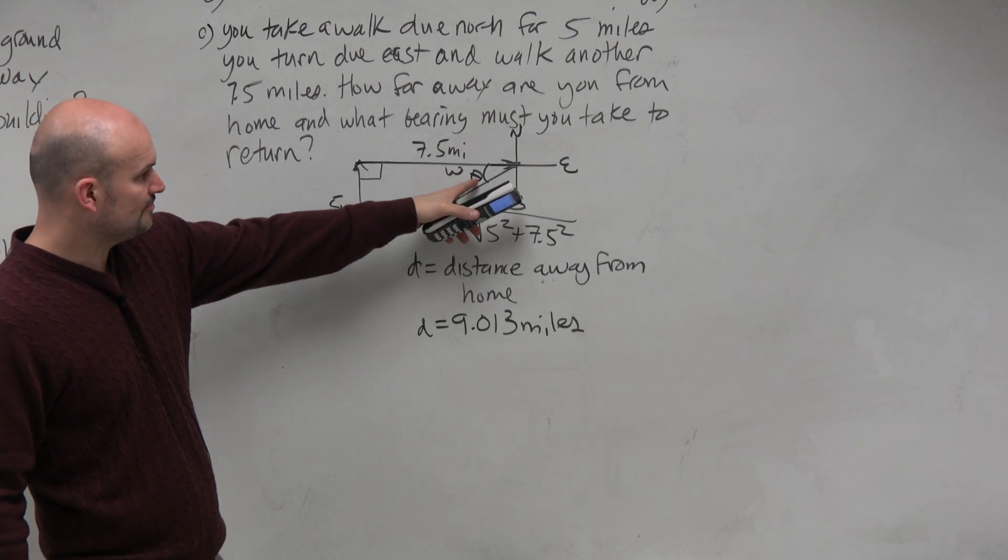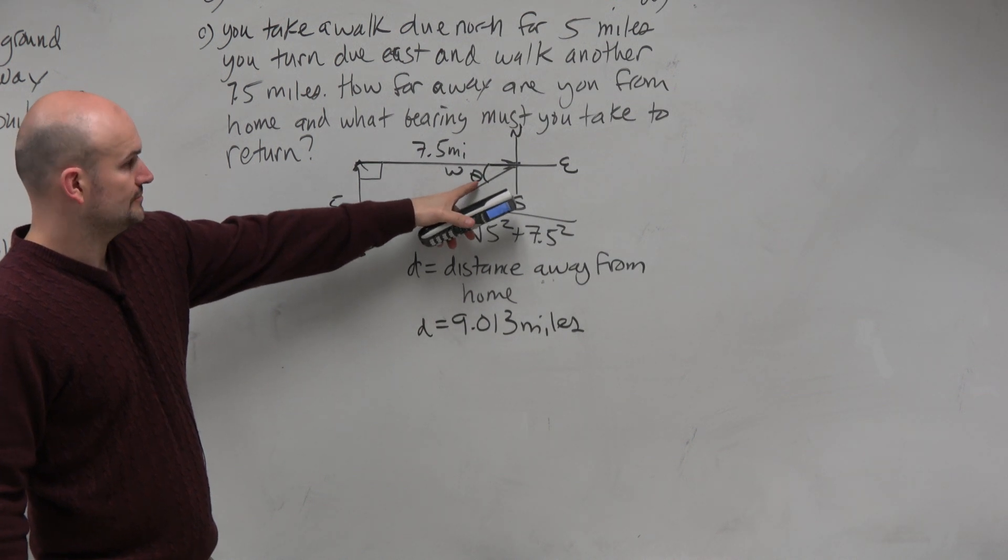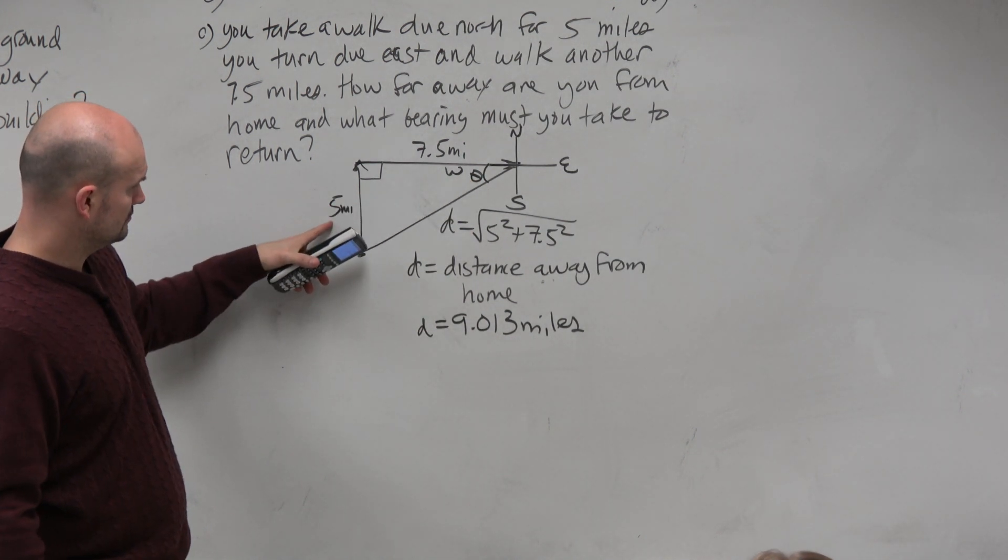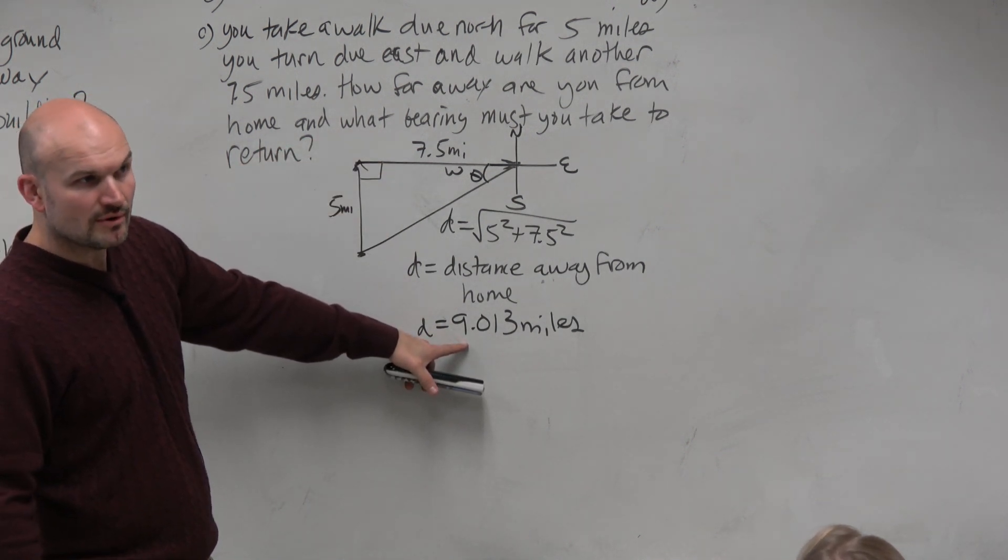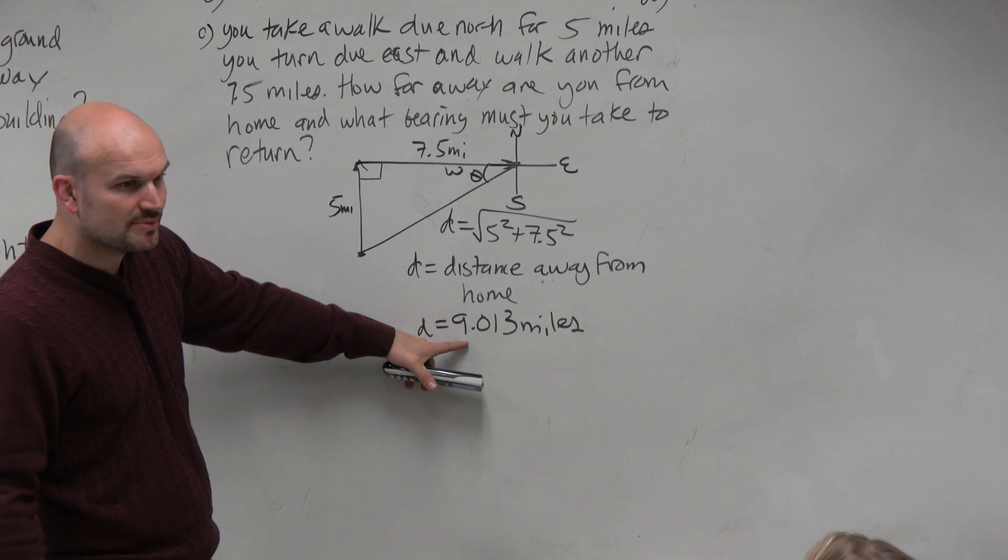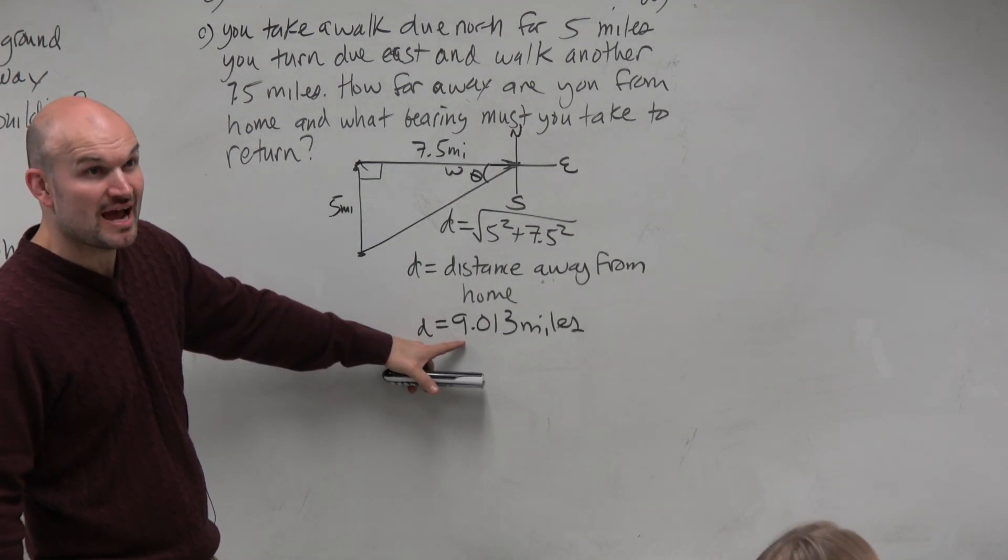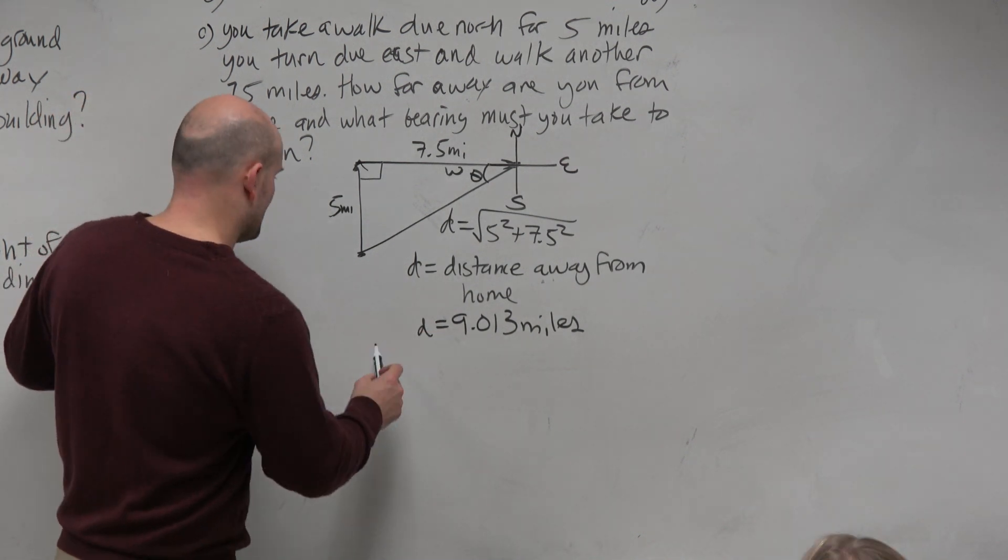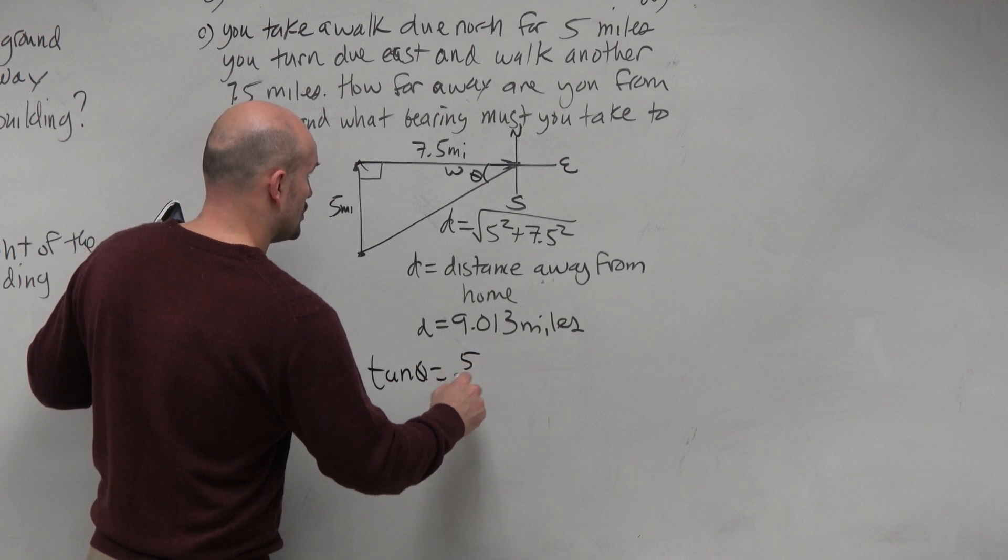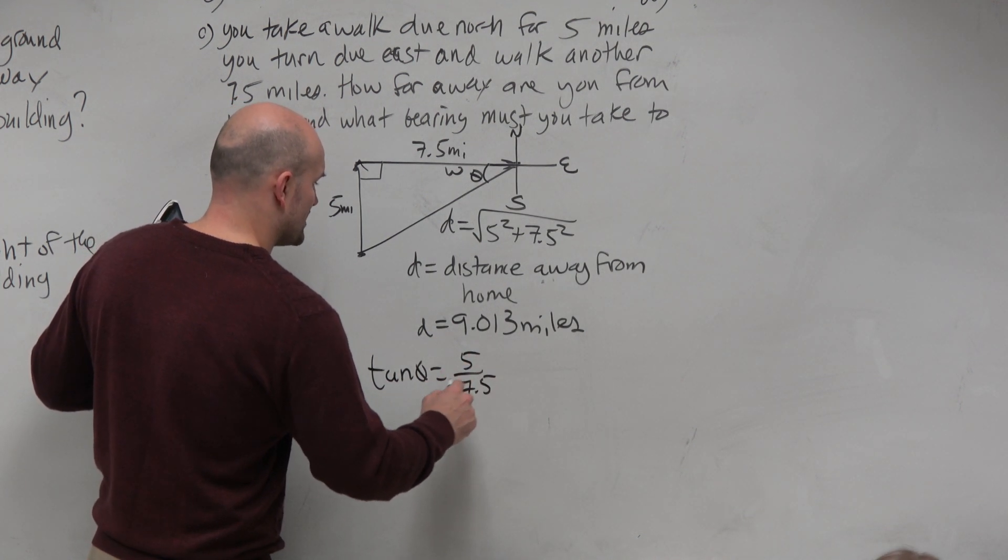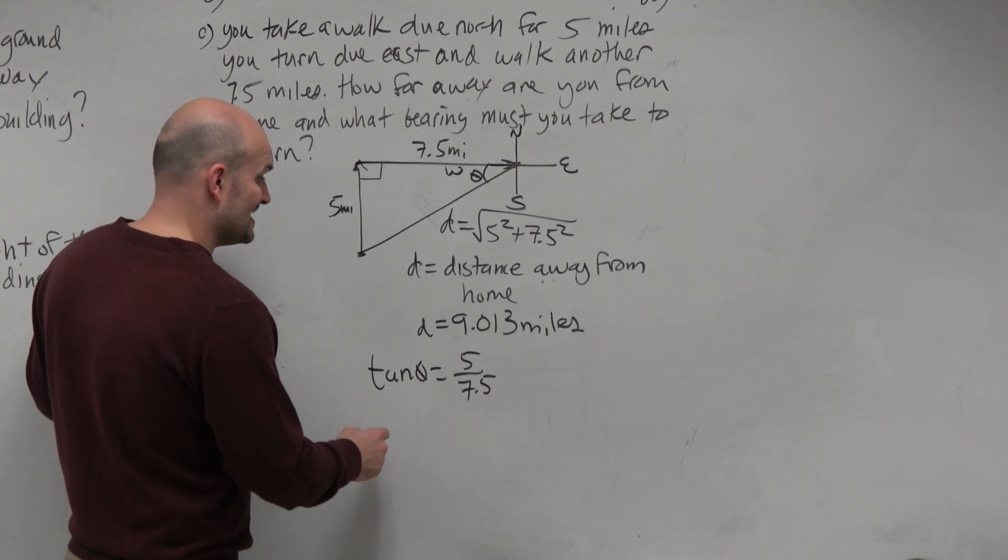Yeah. So this angle, based on this angle, what side lengths of the triangle do I have? Opposite and adjacent. You could use any trig function, right? But we don't really want to use the hypotenuse here because that's calculated, right? So typically don't use a calculated answer unless you have to. So I'm going to say, all right, if I have tangent of theta equals opposite over adjacent. Well, crap, how do I solve for a theta? Tangent inverse.